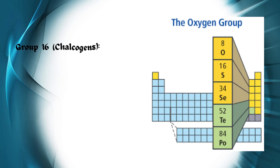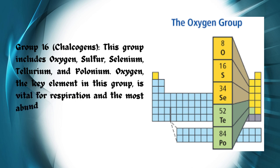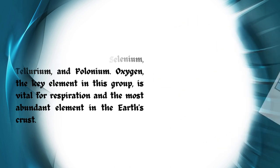Group 16, Chalcogens: This group includes oxygen, sulfur, selenium, tellurium, and polonium. Oxygen, the key element in this group, is vital for respiration and the most abundant element in the Earth's crust.